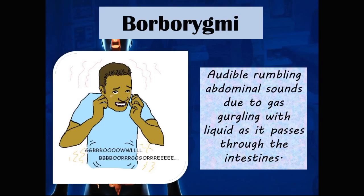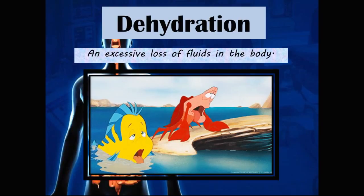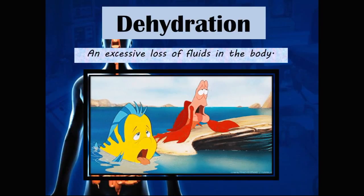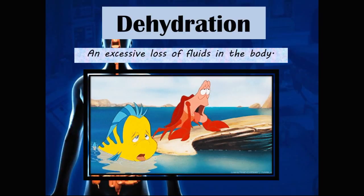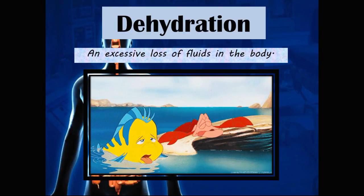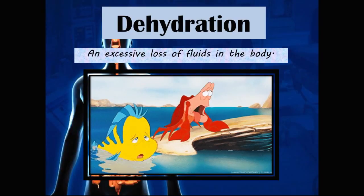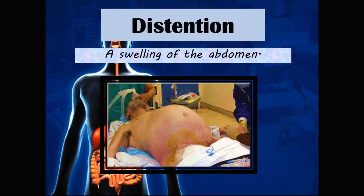Borborygmy is the audible rumbling abdominal sounds due to gas gurgling with liquid as it passes through the intestines. Dehydration is an excessive loss of fluids in the body. Distension is a swelling of the abdomen.